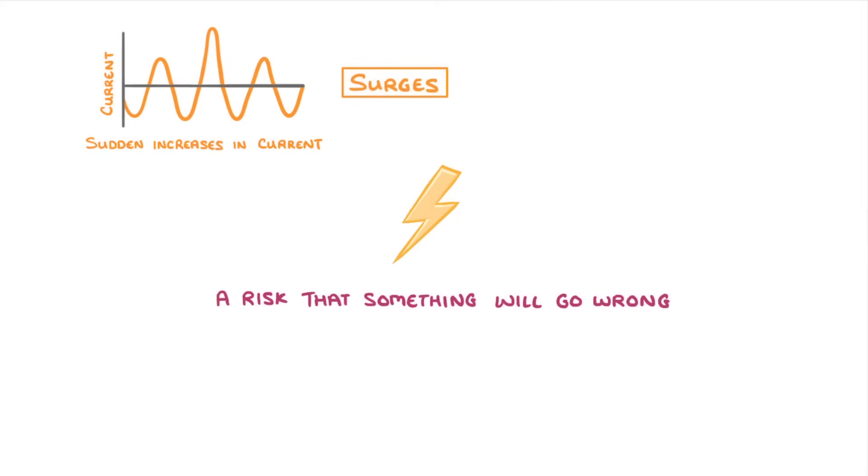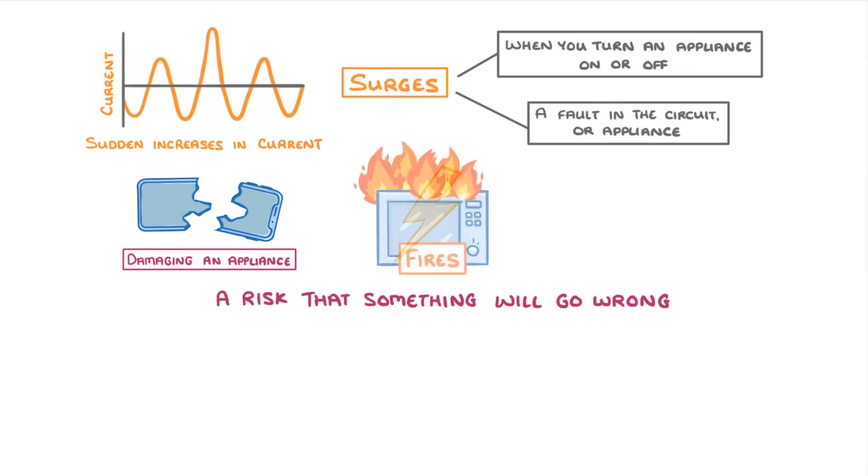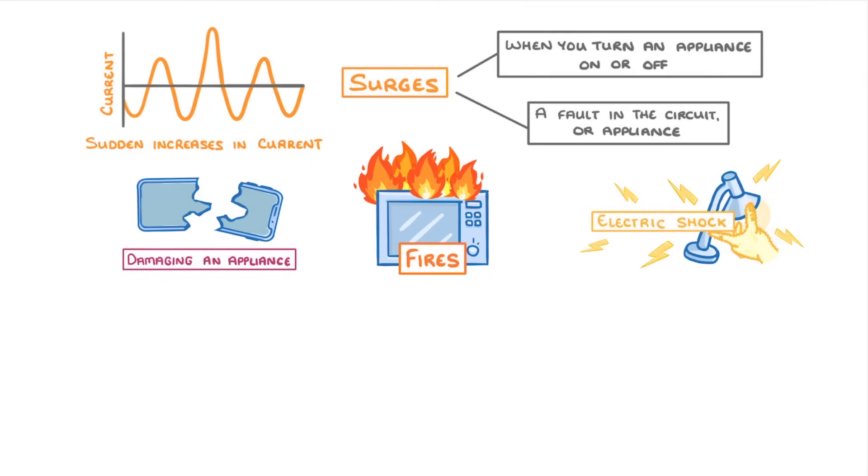These can happen either when something changes in a circuit, like when you turn an appliance on or off, or because of a fault in the circuit or appliance. As well as damaging the actual appliance, surges can sometimes be more serious, causing fires or electric shocks.